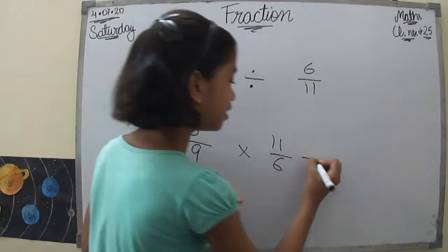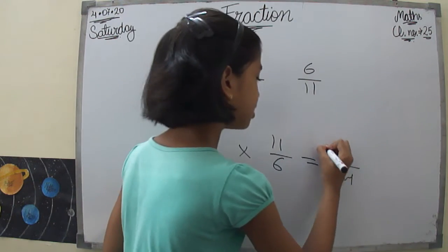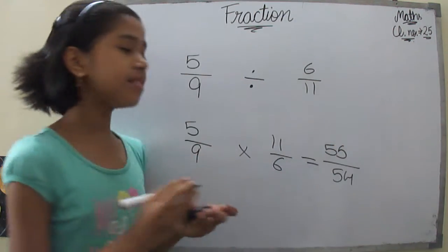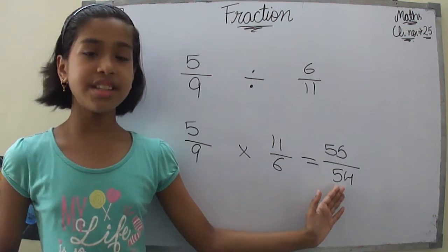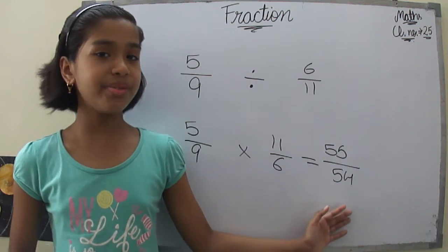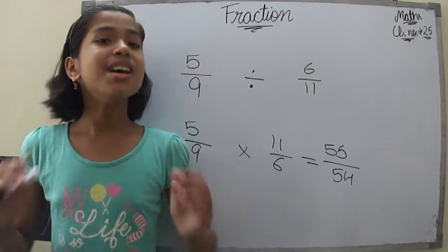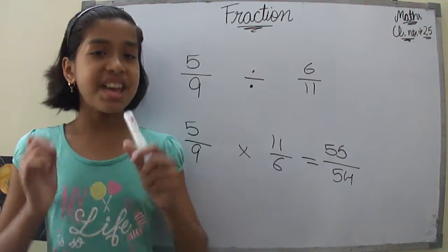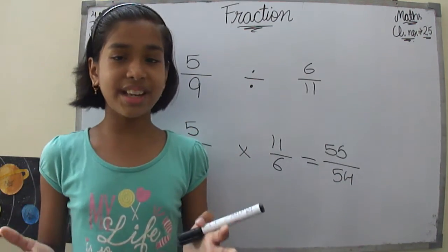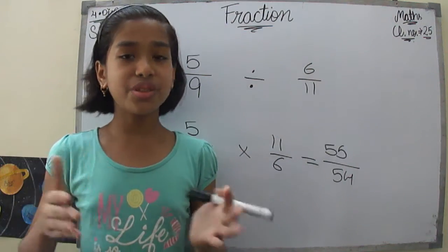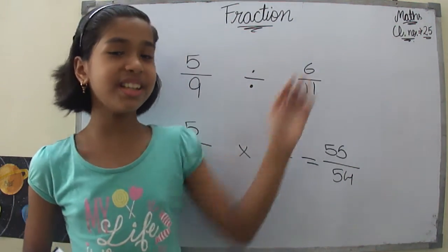Multiplying these out, we get 55 upon 54. You can then convert this improper fraction into a mixed fraction. For that, you can click the i button to go to the previous video where we talked about that conversion.